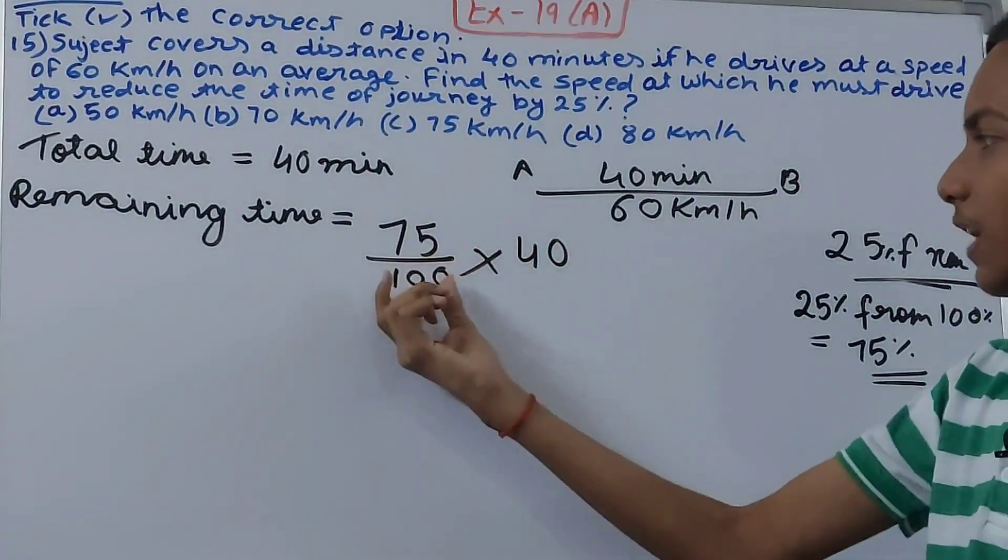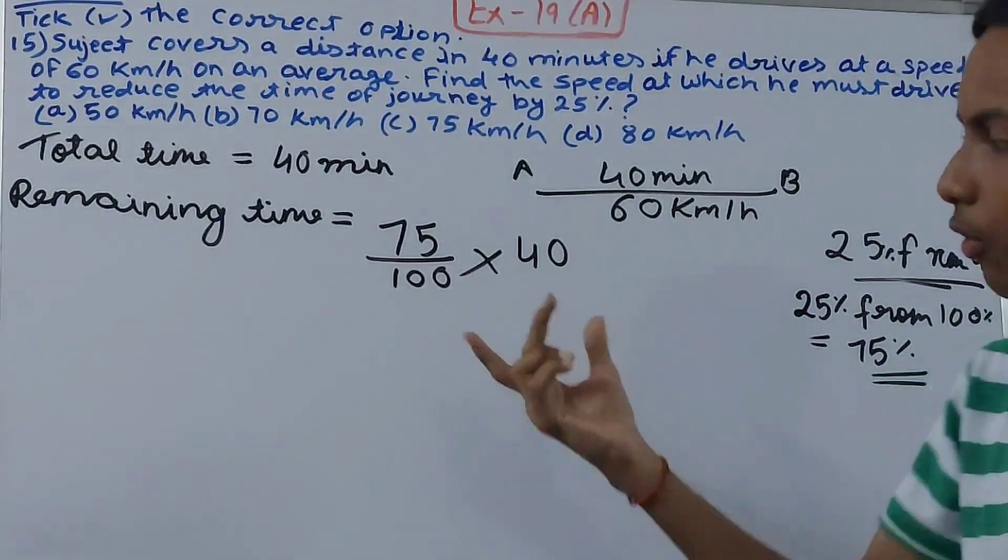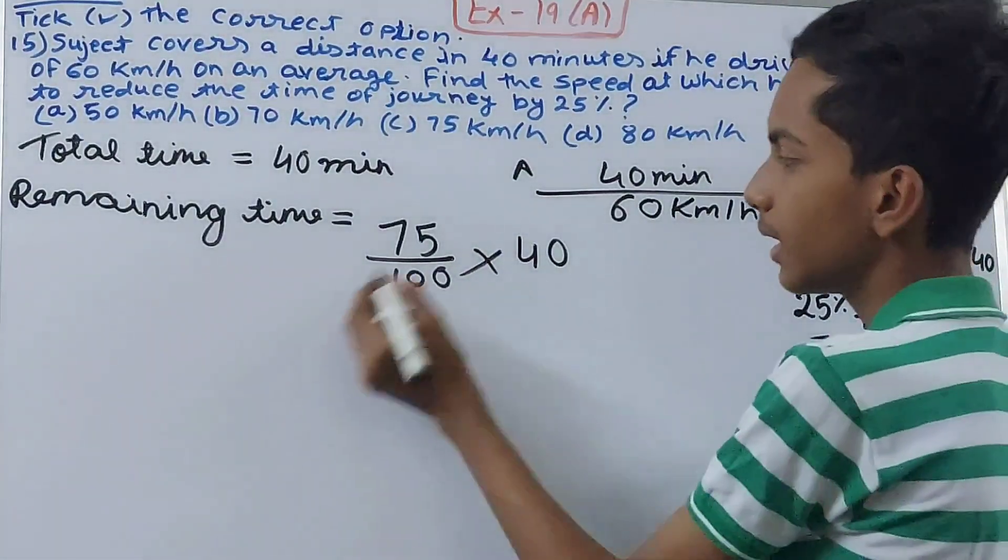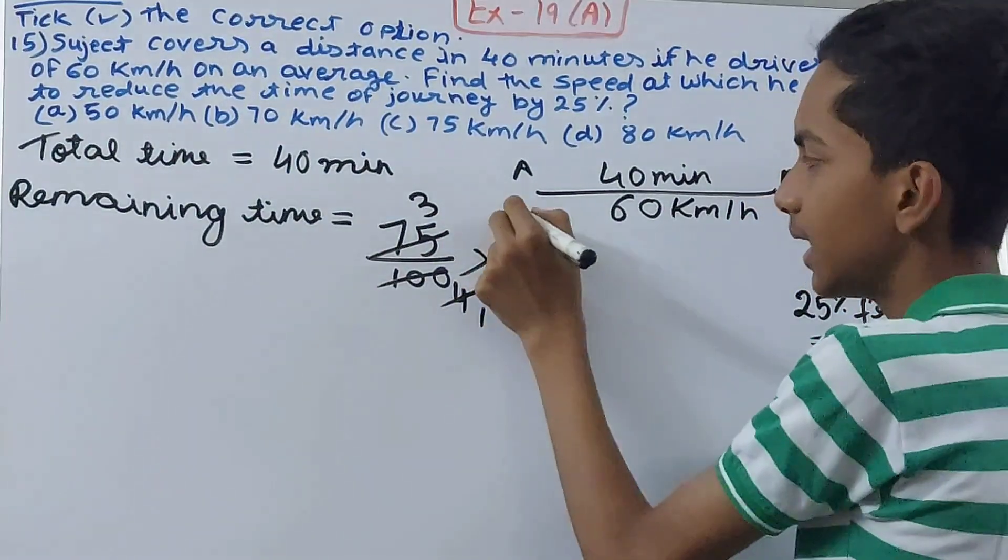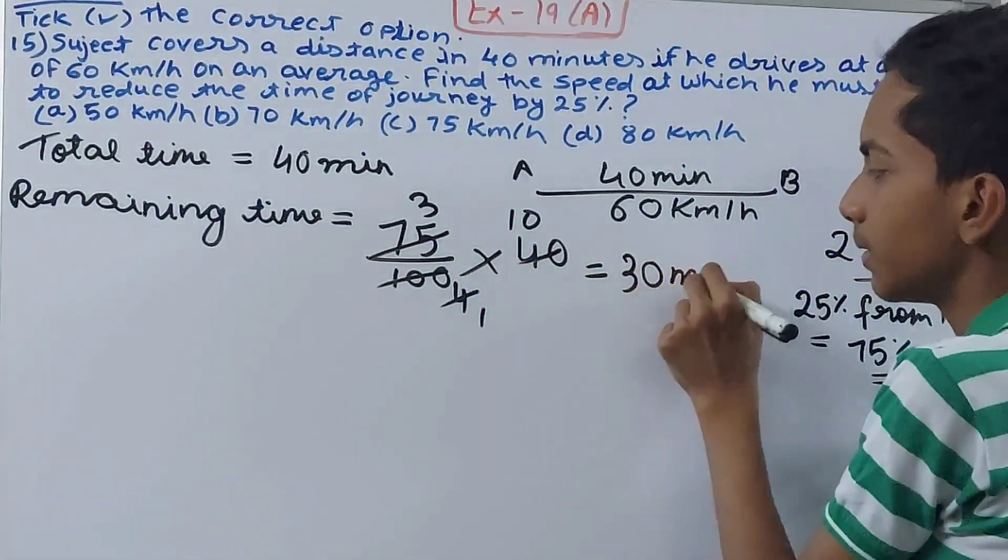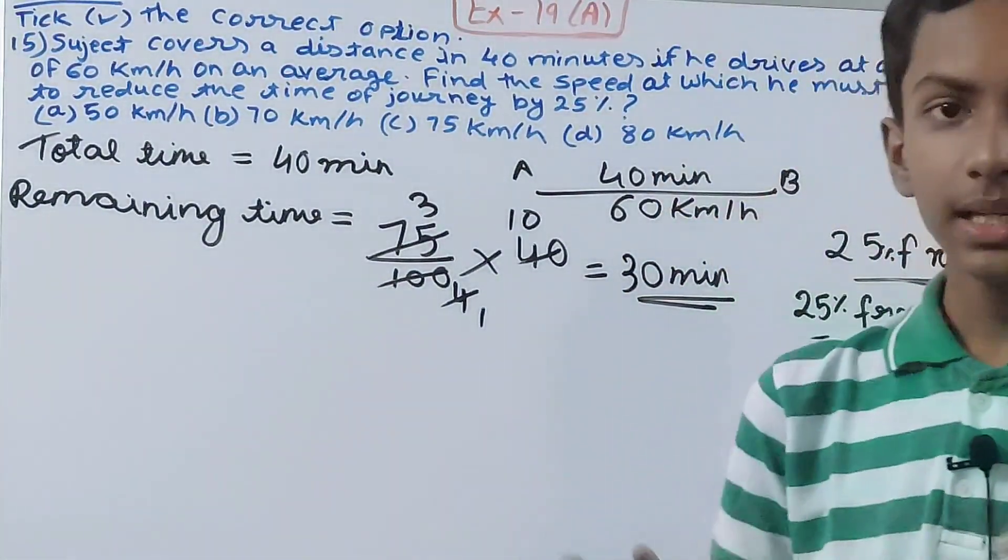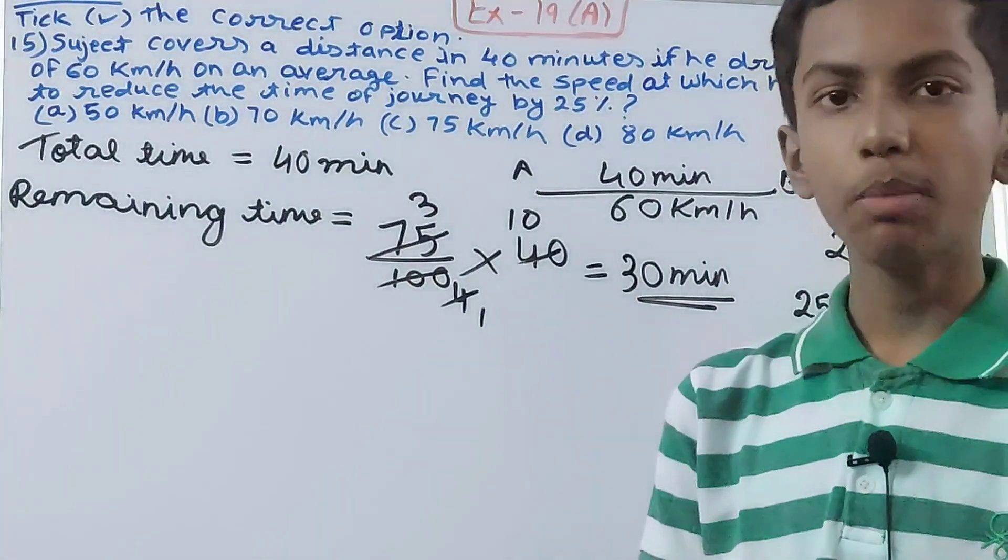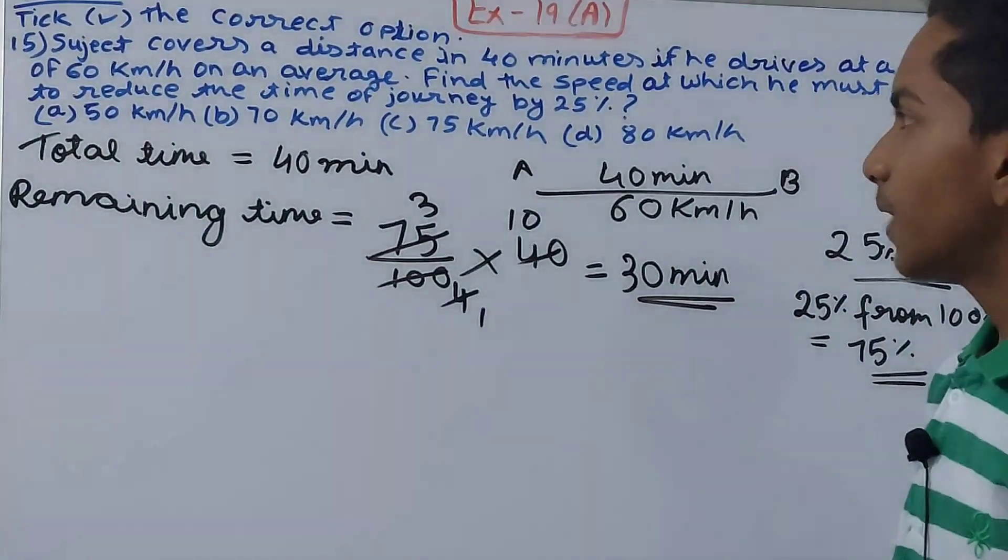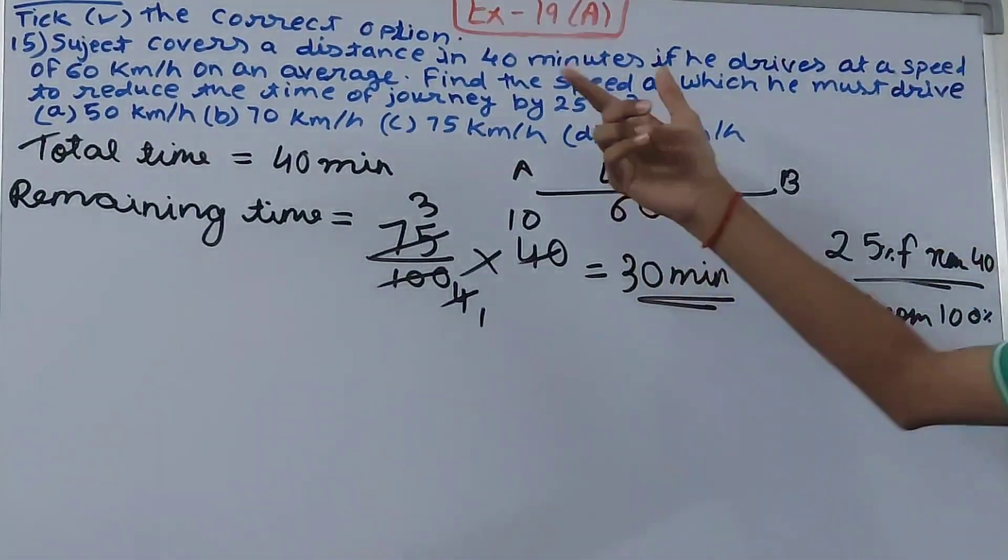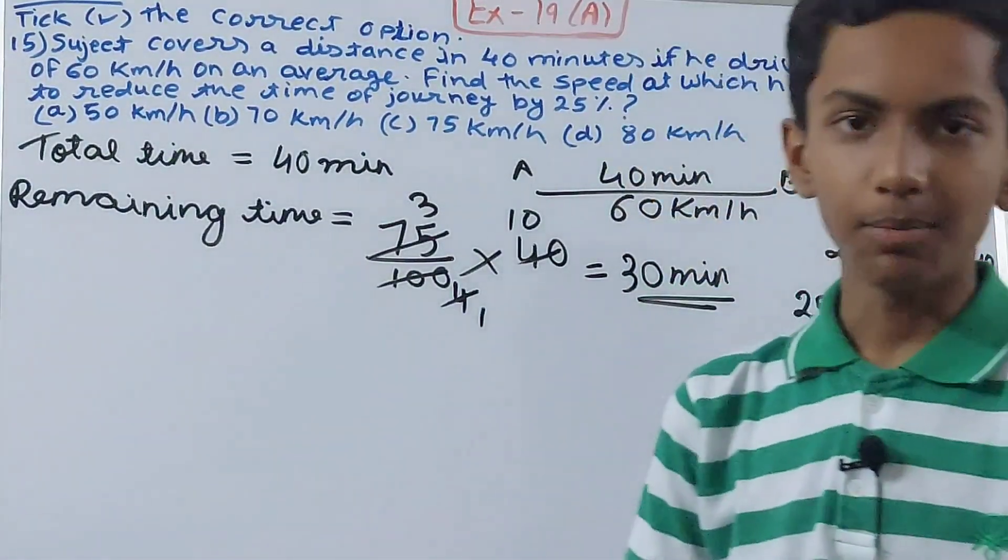So 75 percent means 75 upon 100 into 40 minutes. 40 goes 10 times, so we get 30 minutes. That means 30 minutes is the time that is left after reducing it by 25 percent. But it wants the speed, so we know speed equals distance upon time.